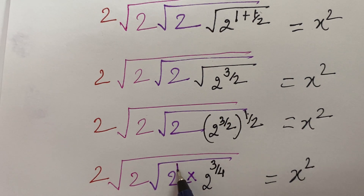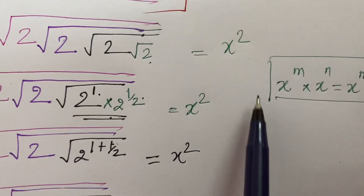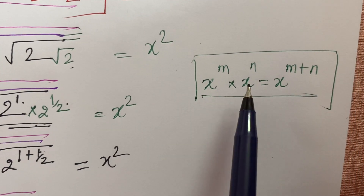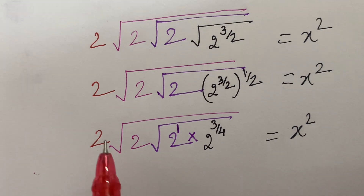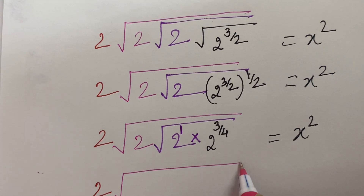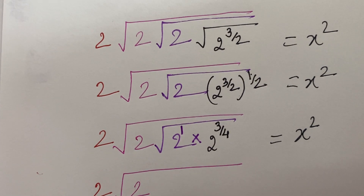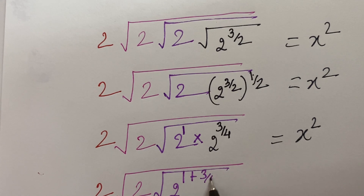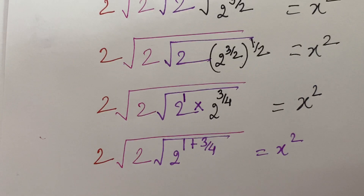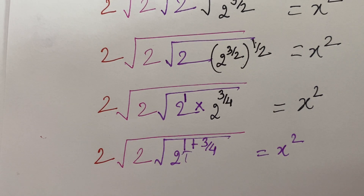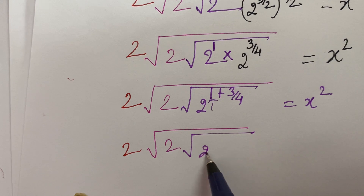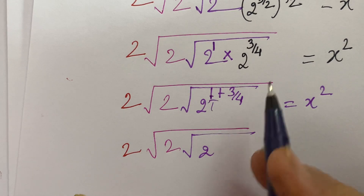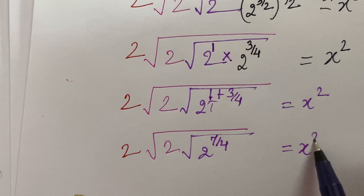Now what is the power here? 1. Again we apply the same laws of indices: a raised to the power m multiplied by x raised to the power n is equal to x raised to the power m plus n. So now what do we get? 2 into square root of 2 into root of 2 raised to the power 1 plus 3 upon 4 is equal to x square. Again cross multiply, you get 2 into square root of 2 into root of 2 raised to the power — 4 ones are 4, 4 plus 3 is 7 — 2 raised to the power 7 upon 4 is equal to x square.